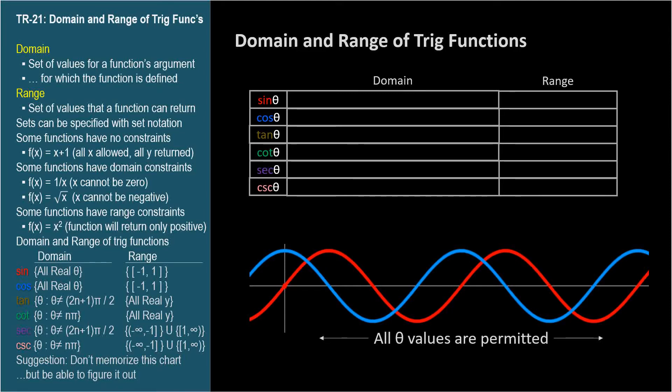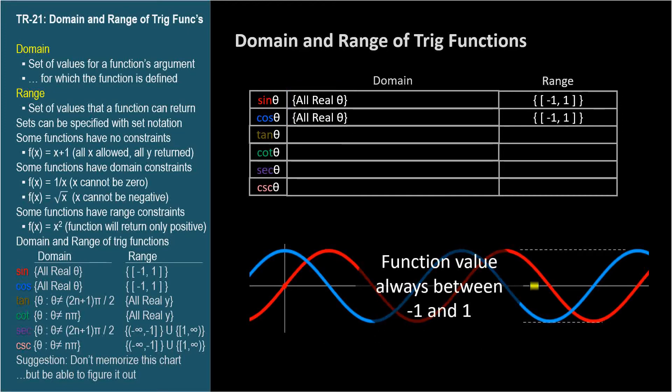We can take the sine and cosine of any angle, from negative infinity to positive infinity. There aren't any fractions or square roots to consider, so the domain is all real values for theta. But the range is constrained to real numbers between and including -1 to 1.